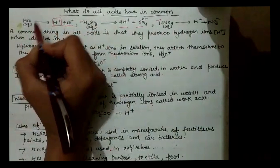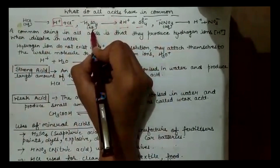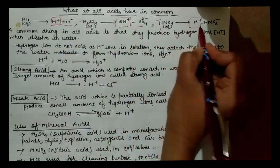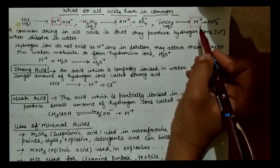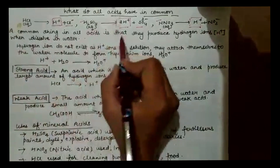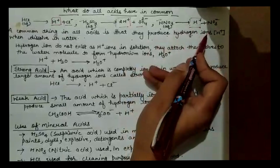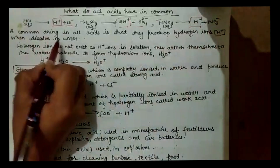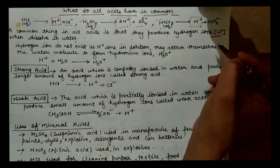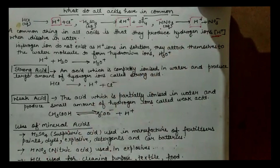In hydrochloric acid, hydrogen ion is present. In sulfuric acid, hydrogen ion is present. In nitric acid, hydrogen ion is also present. So what is common in all acids? A common thing in all acids is that they produce hydrogen ions — H⁺ — when dissolved in water. Whenever you dissolve any acid in water, hydrogen ions are present there. This production of hydrogen ions occurs in all acids.